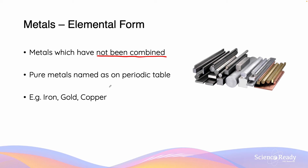The names of pure metals are simply the ones that are named as on the periodic table. So for example, iron, gold, and copper are all names given to the metals uncombined in the periodic table.